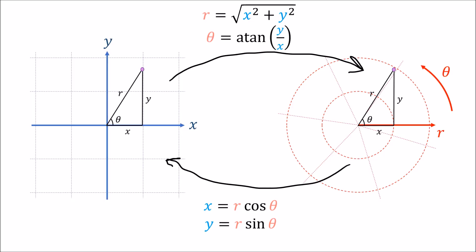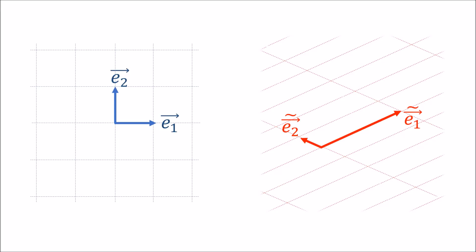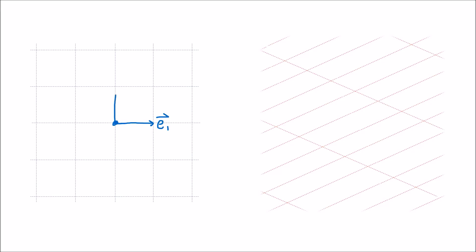We can answer that by looking at coordinate systems where all the gridlines are parallel, as in the tensors for beginners series. Here we have two different vector bases for two-dimensional space and their associated coordinate gridlines. If we make the basis vectors disappear but leave the gridlines, we can still figure out what the basis vectors should be: we simply pick a point and follow one of the coordinate lines to get the e1 direction, another to get the e2 direction, and similarly for the e1-tilde and e2-tilde basis vectors.